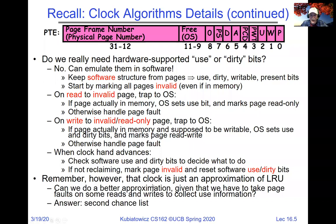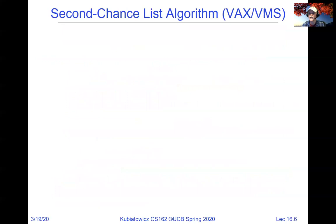The clock algorithm is just an approximation to LRU. Can we do better? If we don't have use and dirty bits in hardware, we're page-faulting a lot — essentially on every pass around the clock. The answer is yes: we can use something called a second chance list. This different algorithm showed up on the original VAX hardware.